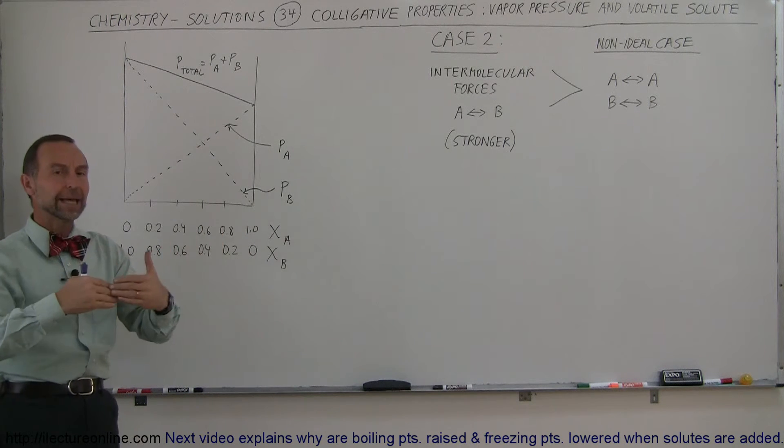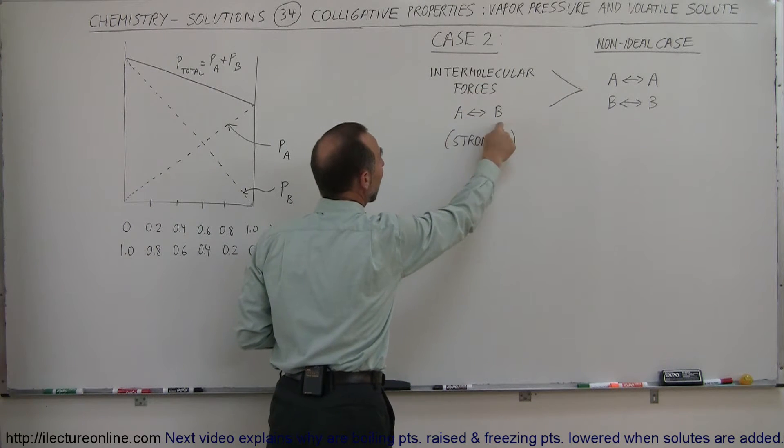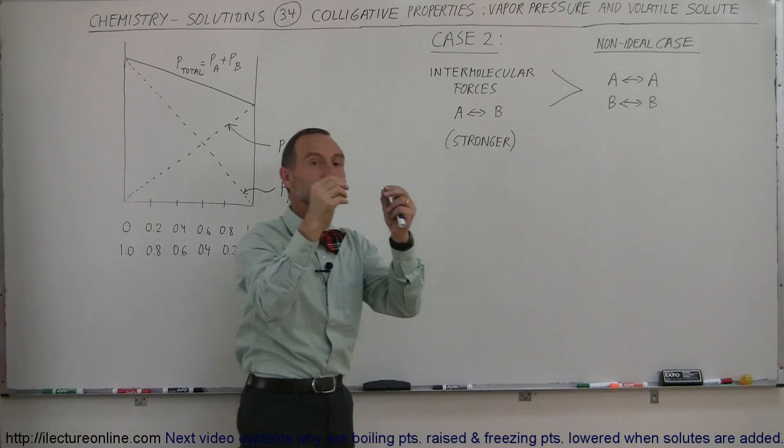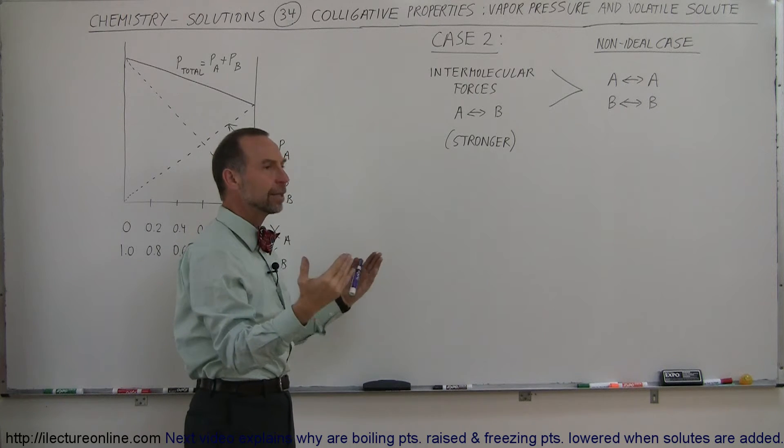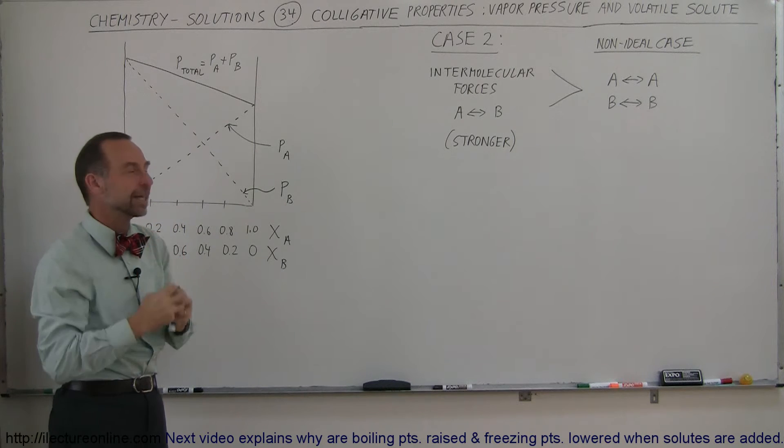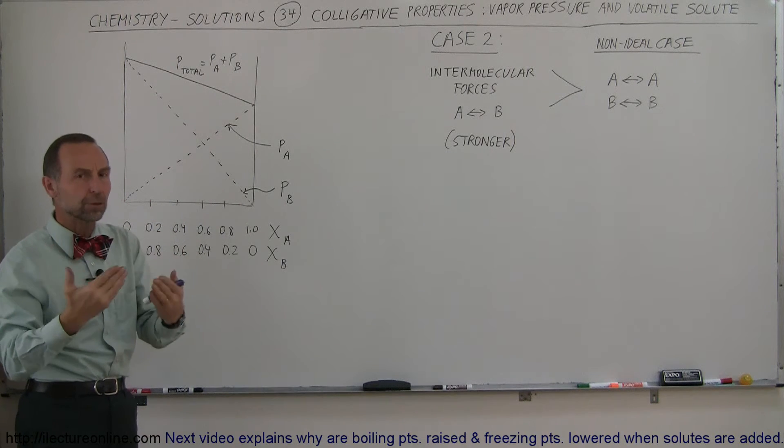So what happens when you bring the two together in case two where the intermolecular forces between the opposite components are stronger than the intermolecular forces between the components of liquid A and the components of liquid B? You put them two together, now you end up with stronger forces between the molecules on average, meaning the molecules are held tighter together, and so therefore you expect the vapor pressure to go down, to be reduced.